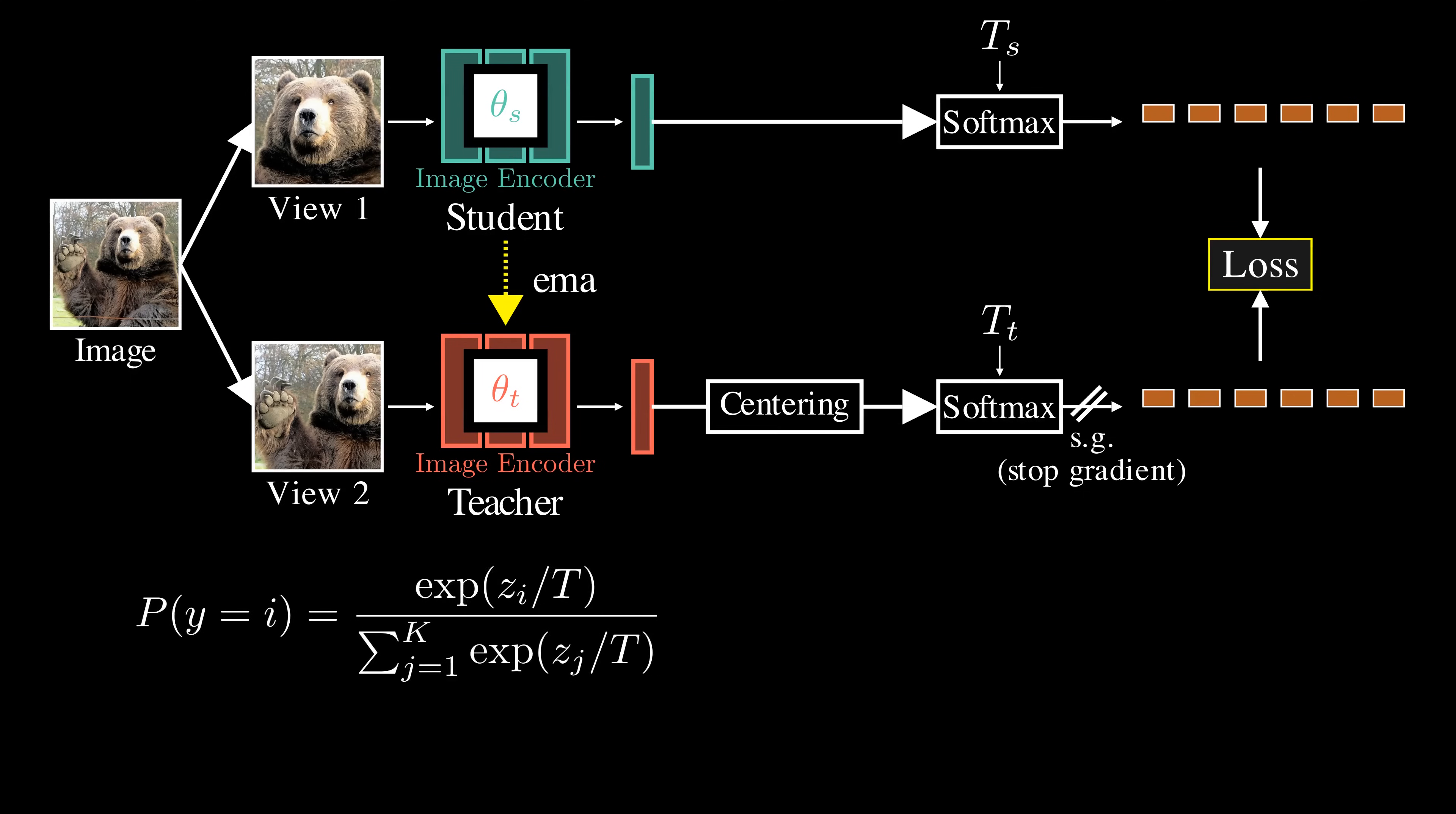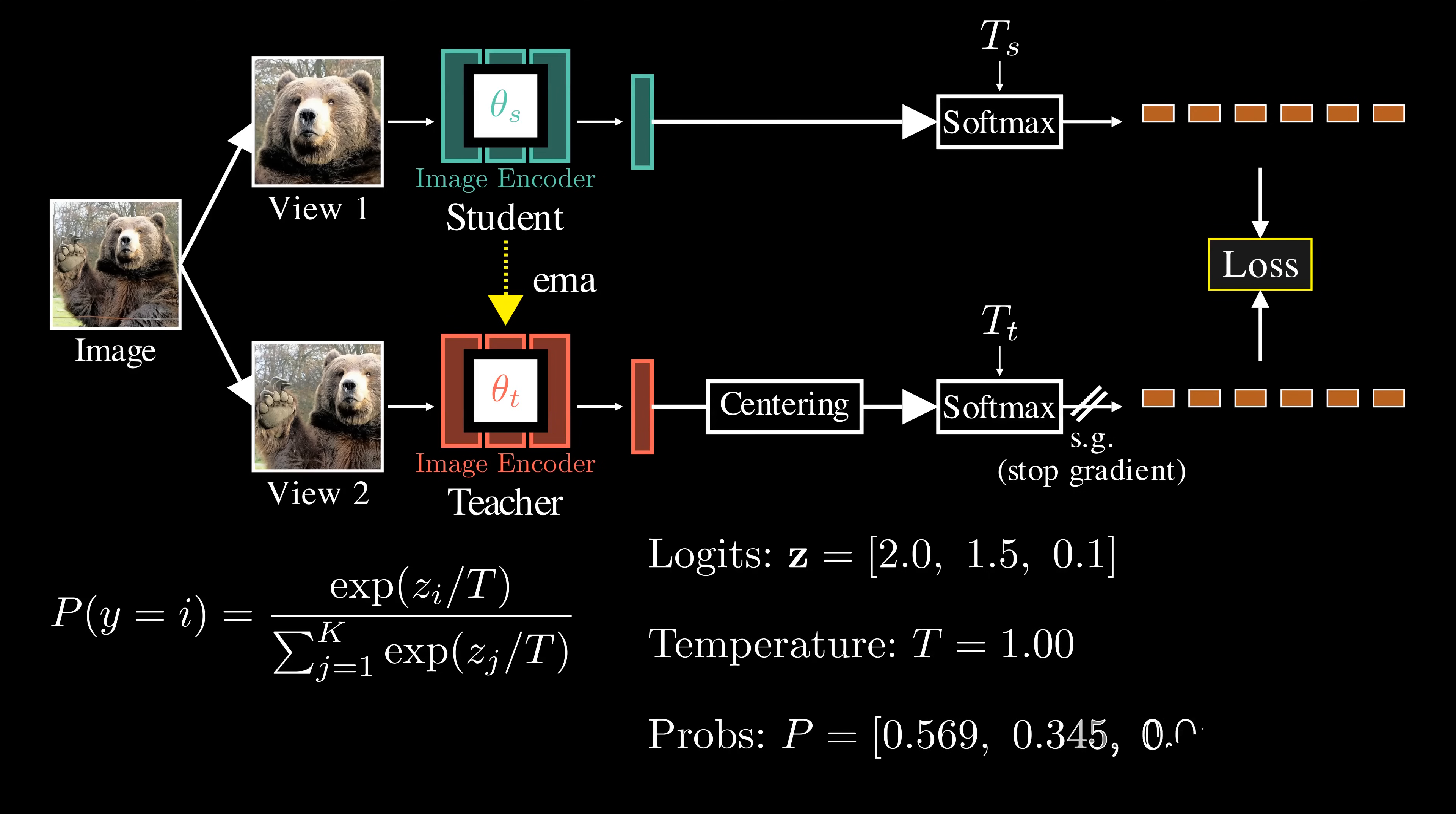Imagine we have logits 2.0, 1.5, and 0.1 for three classes. Using temperature 1, we have the probability distribution P. As we lower the temperature T, the probability distributions produced by the softmax become more peaked, centering more mass on the largest logits. If we do the opposite and increase the temperature, the output probabilities become less sharp, and the probability values are more evenly spread across all classes.